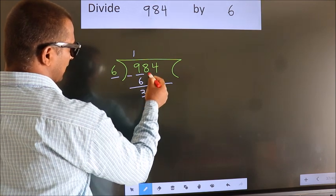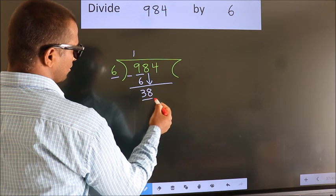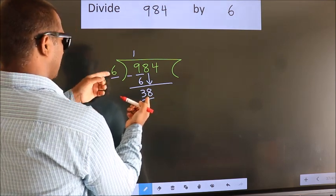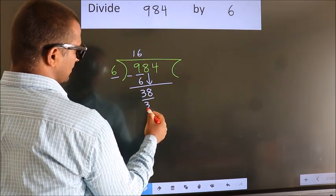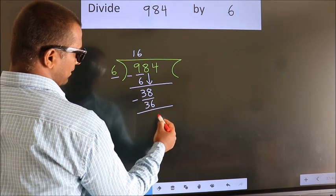After this, bring down the beside number. So 8 down. So 38. A number close to 38 in 6 table is 6 times 6, 36. Now we subtract. We get 2.